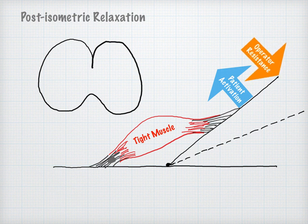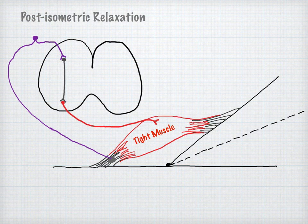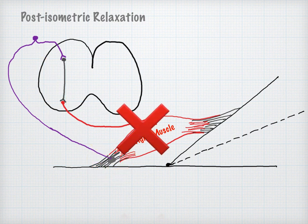The operator isometrically resists the action, and the muscle's Golgi tendon body receptors are stimulated. A Golgi body reflex is completed through the spinal cord to inhibit the contraction of the muscle containing the stimulated Golgi bodies.